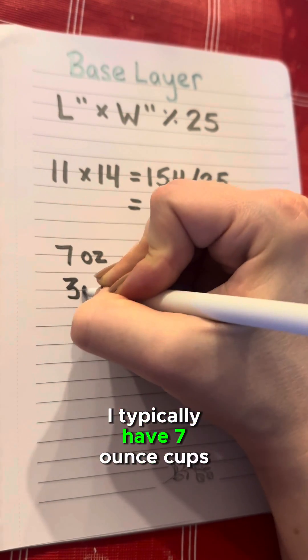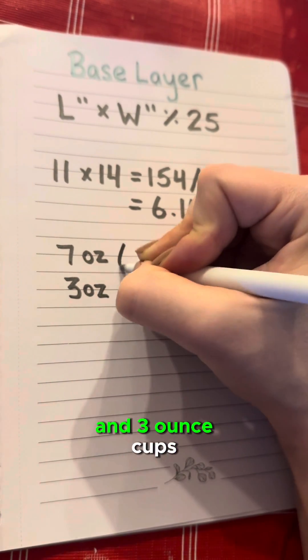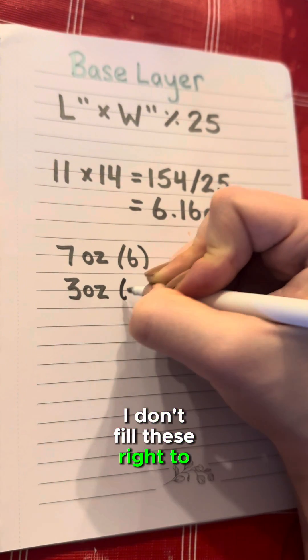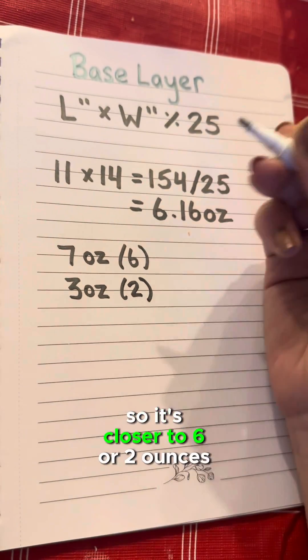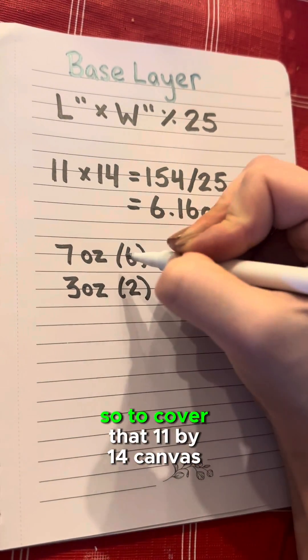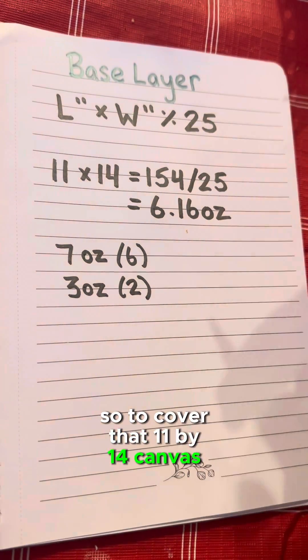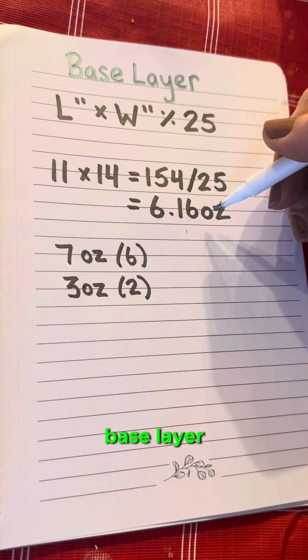With my pours I typically have 7 ounce cups and 3 ounce cups. I don't fill these right to the top so it's closer to 6 or 2 ounces. So to cover that 11 by 14 canvas, one of these 7 ounce cups would be enough for your base layer.